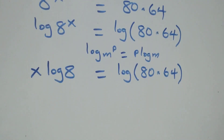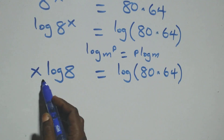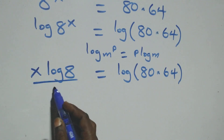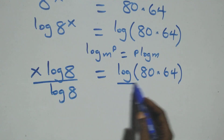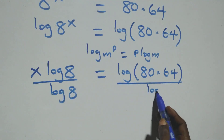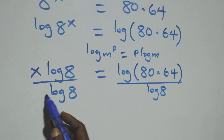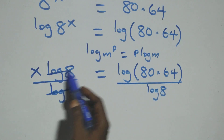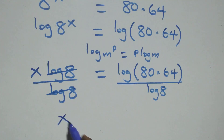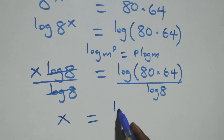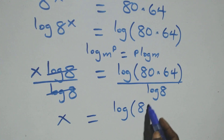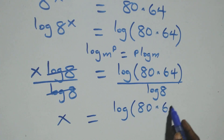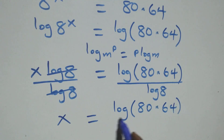From here, we divide both sides by log 8. That is, divide both sides by log 8, which implies that log 8 cancels on the left side. We have x equals log of 80 times 64 over log 8.